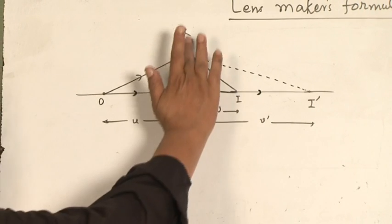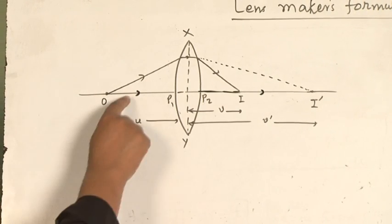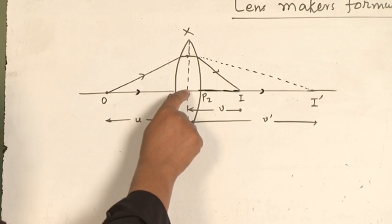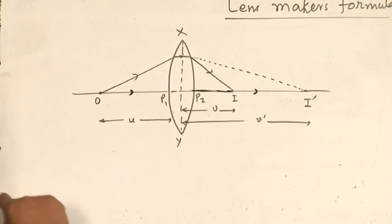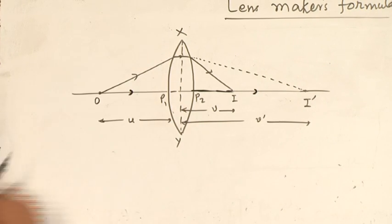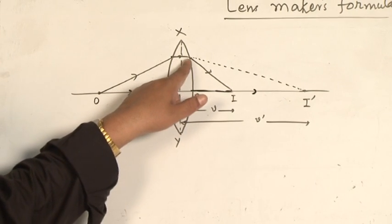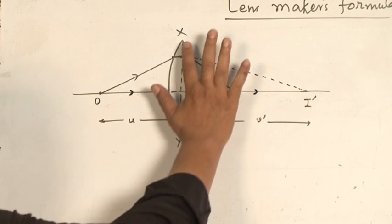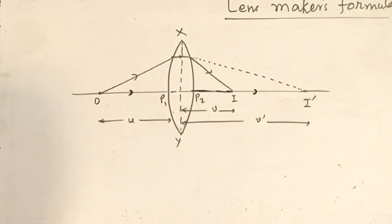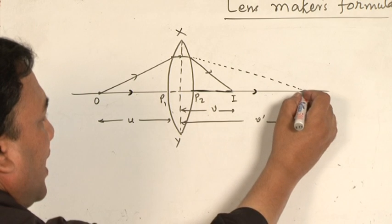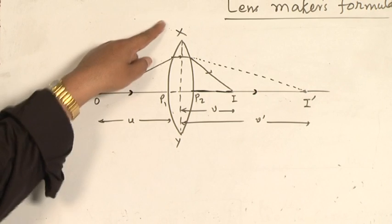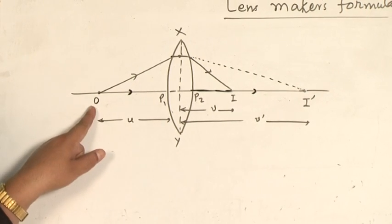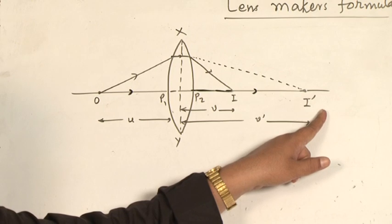In the absence of the second surface XP2Y, one ray of light passing through the center of the lens goes straight and undeviated. The second ray of light falling on XP1Y gets refracted along this direction. Since we have assumed the second surface is not there, this refracted ray goes and meets at a point represented by I dash. Therefore, for surface XP1Y, O is the object and I dash is the image.